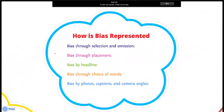Bias can be presented in many ways. You can see bias through selection and omission, through placement, by headline, through choice of words, or by photos, captions, and camera angles.